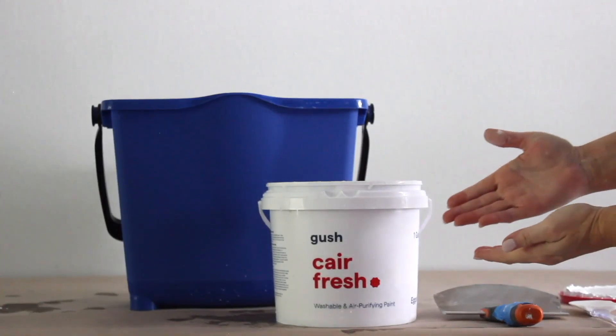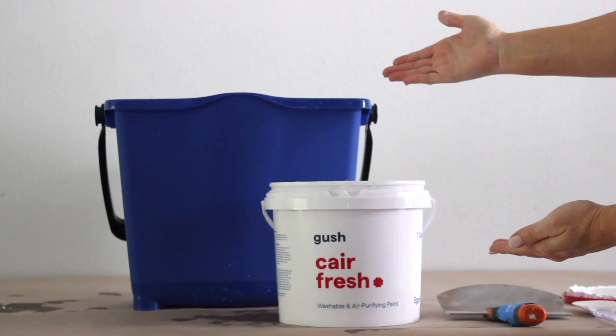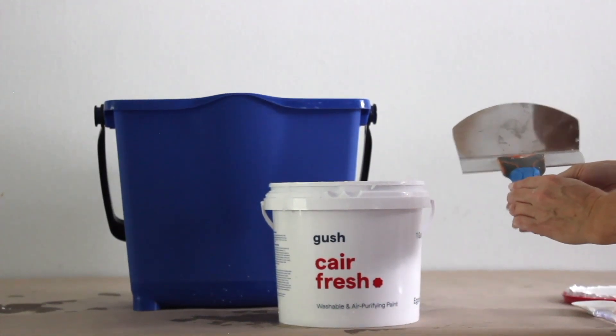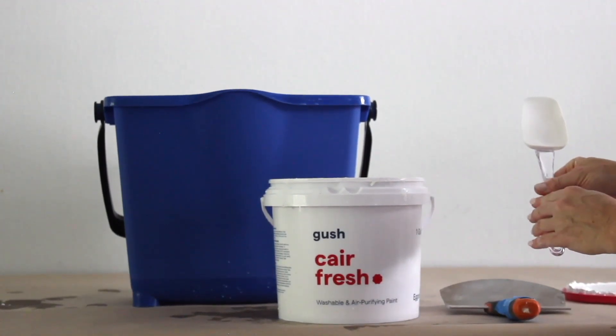Now we're going to pour the water and the paint into the bucket. The water goes in easily, however you need to use a commercial scooper or look in your kitchen for a spatula to remove the paint and dump it into the bucket.